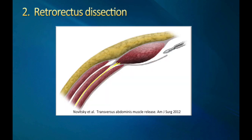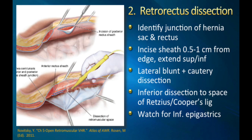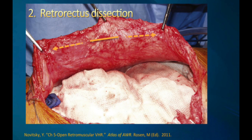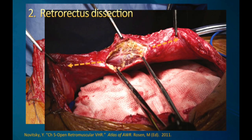The next step begins with a standard retrorectus dissection. You identify the edge of your hernia sac and rectus junction, then you incise the posterior rectus sheath about a half to one centimeter from that edge, extending superiorly and inferiorly and then completing some lateral dissection. An important tip is that before you extend your dissection too much, you need to ensure that you're in the true retrorectus space, because sometimes you may not end up there due to the distortion of tissues from the hernia sac.